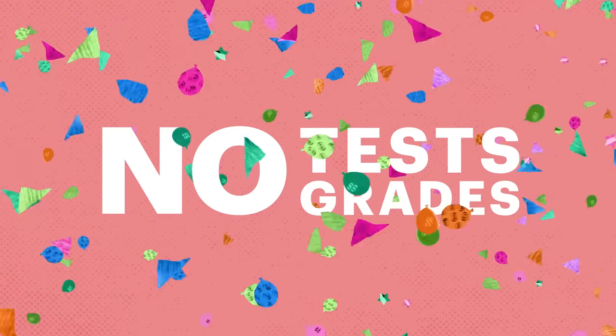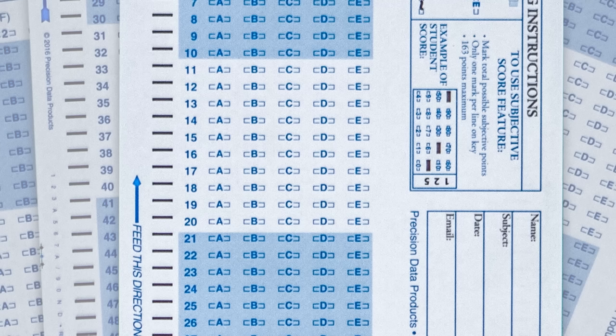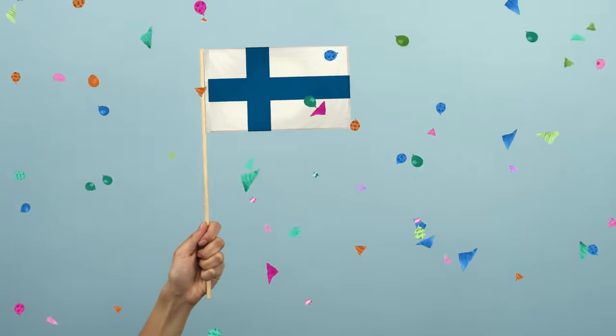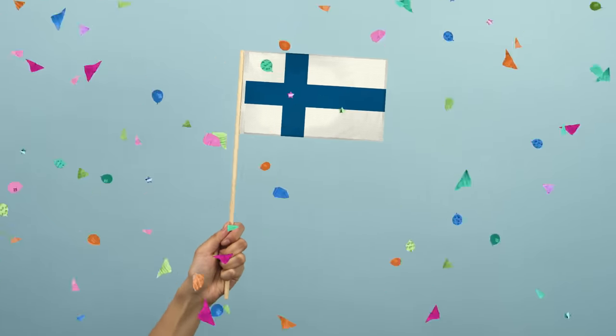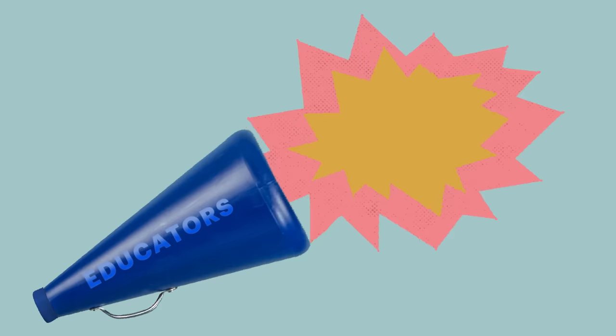For the first six years of school in Finland, there's no measure of a student's academic abilities. The only standardized test given is a final exam at the end of senior year in high school. Yet, Finland students rank top 10 in the world for academic performance year over year.